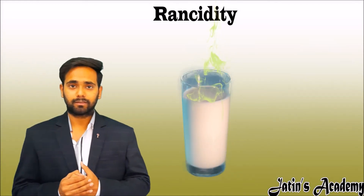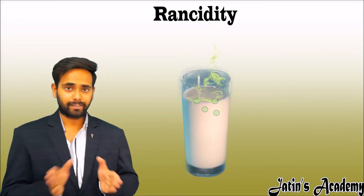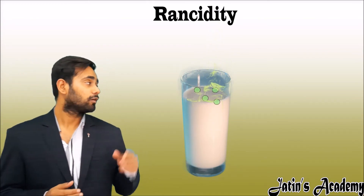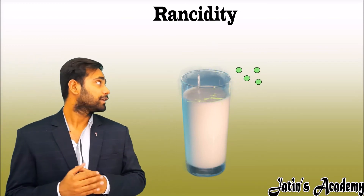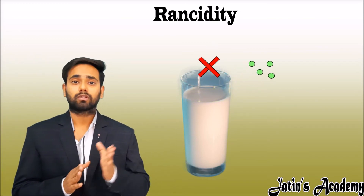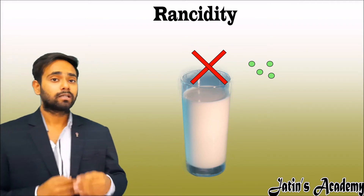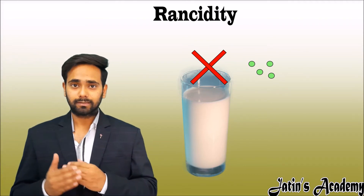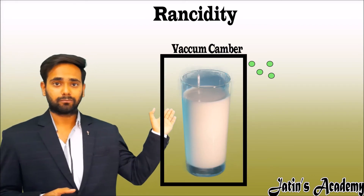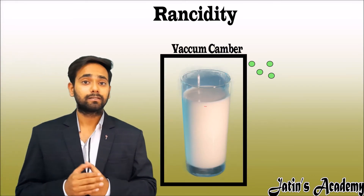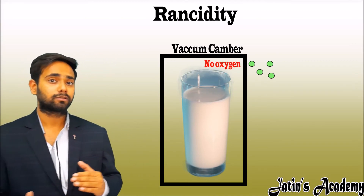How do we prevent rancidity? The cause of rancidity is bacteria which decompose the food and cause oxidation. This means we have to cut down the contact of the food with the bacteria. How do we cut down this contact? Either we put the food in a vacuum state — in a vacuum state there is no oxygen or any gas present.